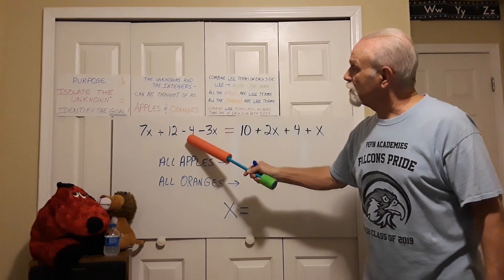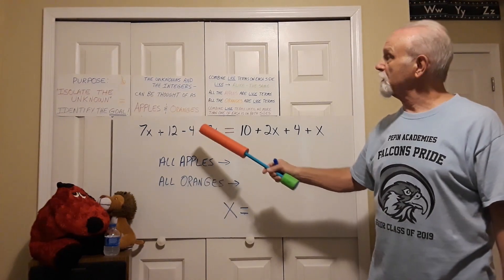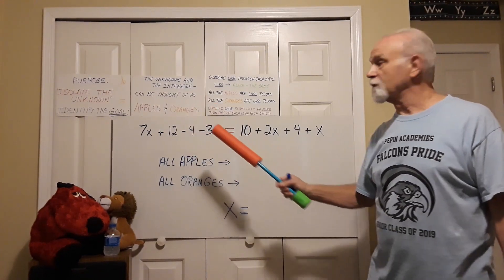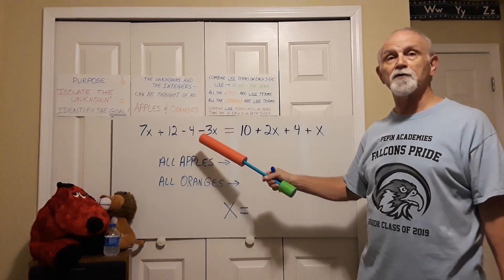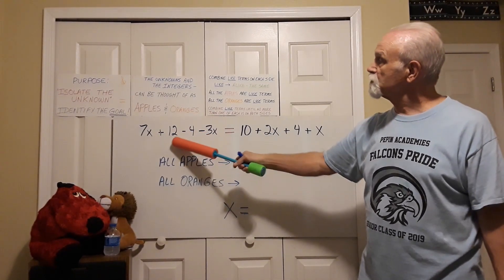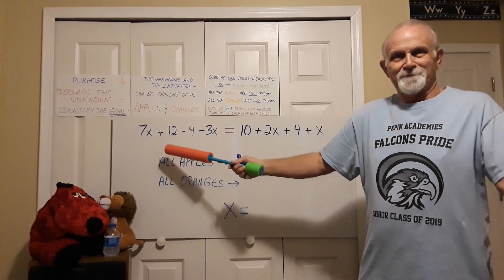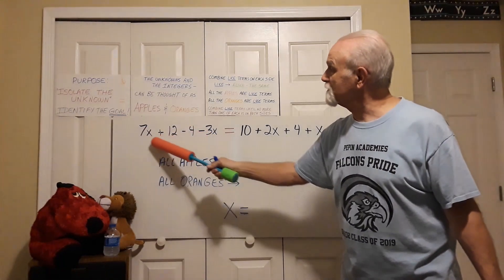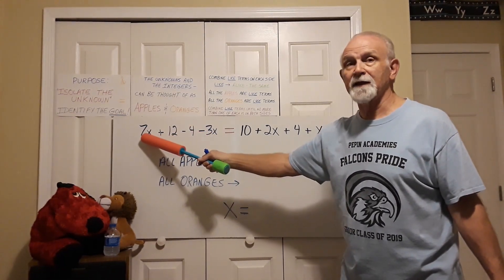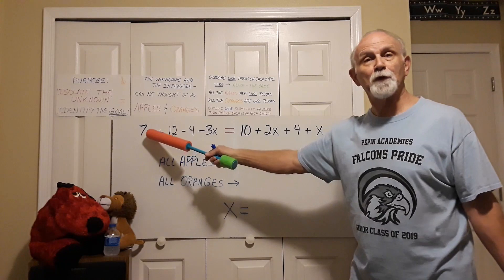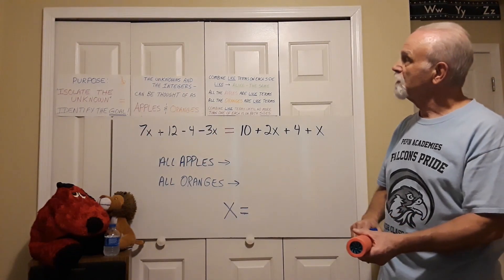This 12 and this 4 are simply integers. Those are what I call oranges, and I will call them oranges. I can combine those. This means I have 12 oranges and I take away 4. Easy, but it has nothing to do with this x and this 7. Those are apples. Those remain separate.